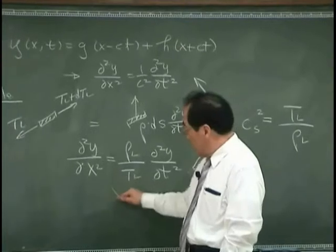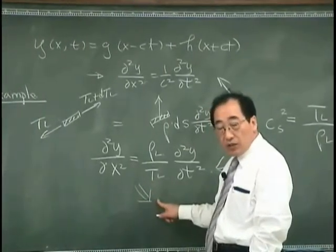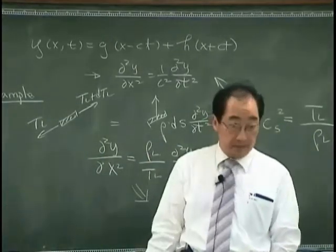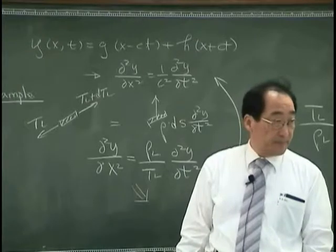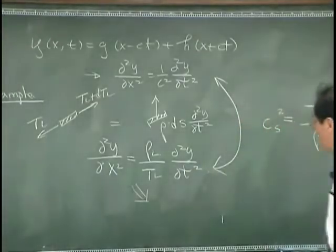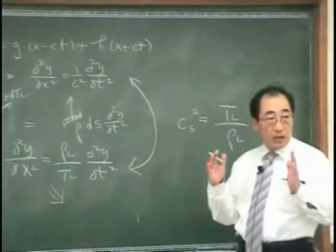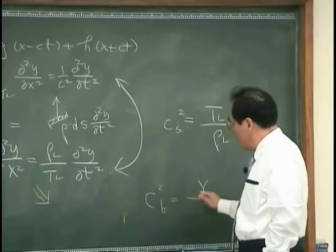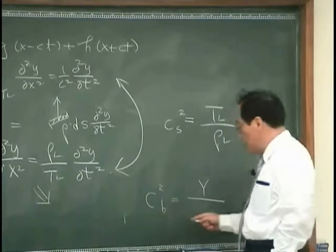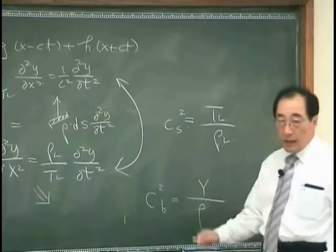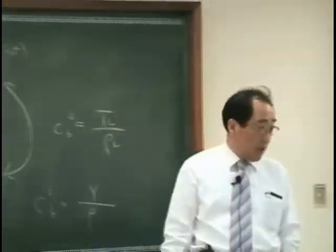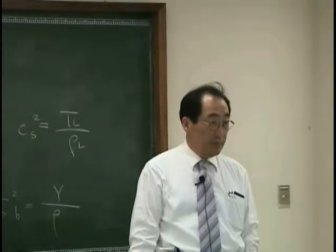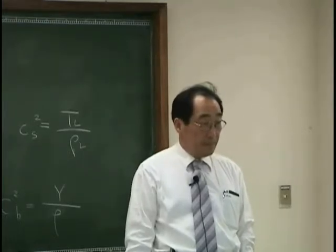Means that if we solve this equation, we can find immediately this is related with the speed of sound. By the same token for the bar case, we found that the speed of propagation in a bar is related with Young's modulus and density of a bar, mass per unit volume. Right? That's what we found.